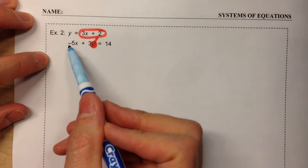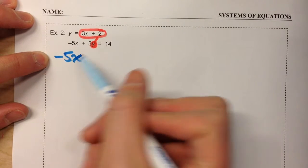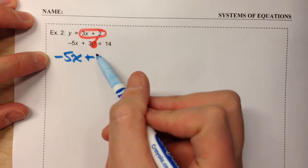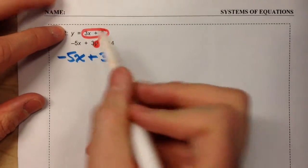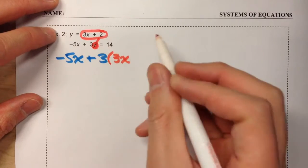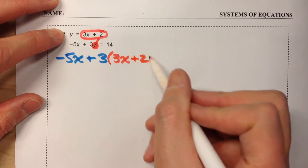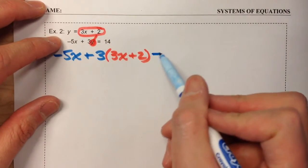So I'm going to start by writing this second equation out: negative 5x plus 3 times, but instead of y, like I said, we're going to replace y with what we know y equals, 3x plus 2. And that equals 14.